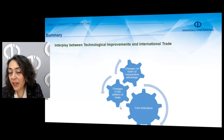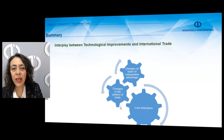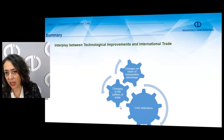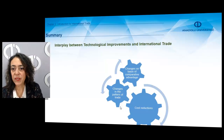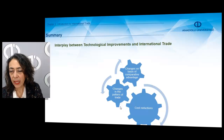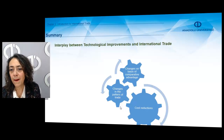As a last subtitle, we give the interplay between technological improvements and international trade. We identify three main effects of technological improvements on international trade. The first, which is quite important, is cost reductions. The second is the changes in the pattern of trade. The third is the changes in the basis of comparative advantage. These three effects are really important regarding the technological impacts on international trade.